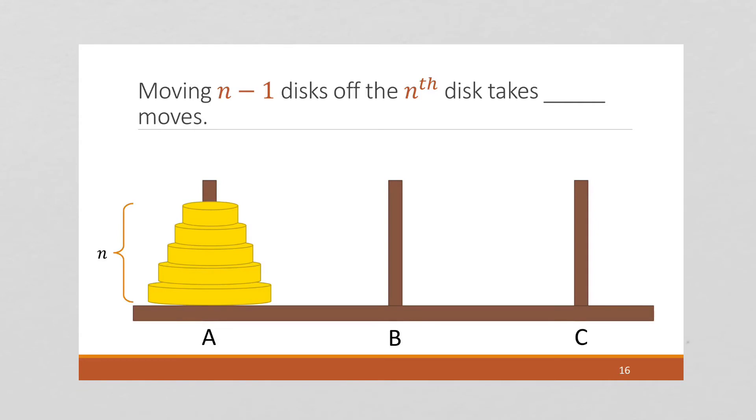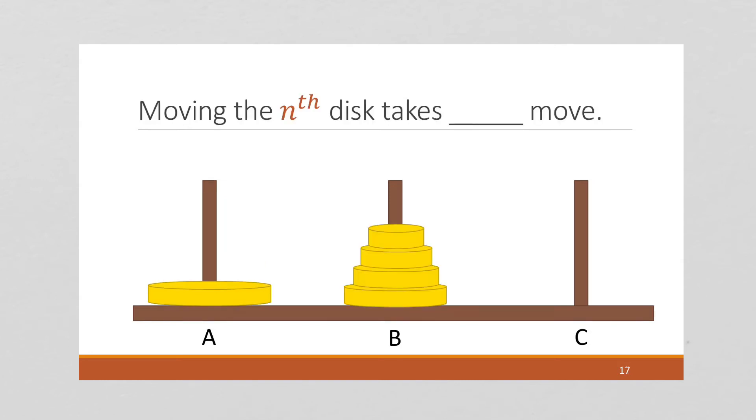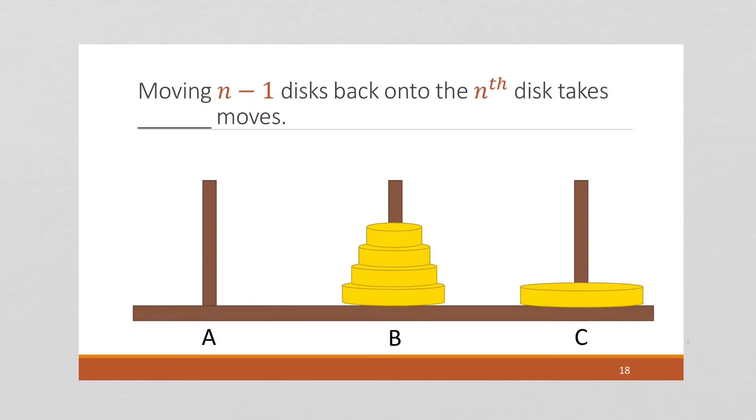Well, again, I don't necessarily know the algorithm, but I know that to move n minus 1 disks off of the nth disk, takes m of n minus 1 moves. And we're going to take the n minus 1 here, and we're going to move it into the middle. And that's going to be m of n minus 1 moves, by our definition of the number of moves. Moving this bottom disk just takes one move, right? I can move it over there in one move.